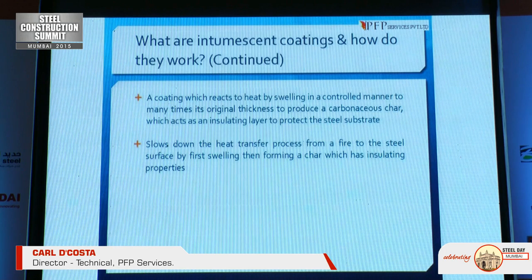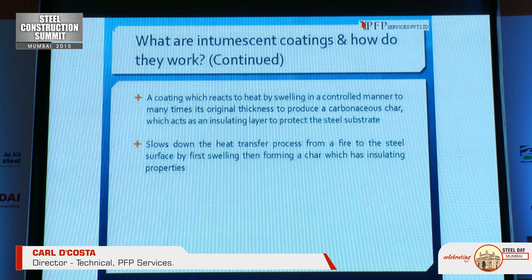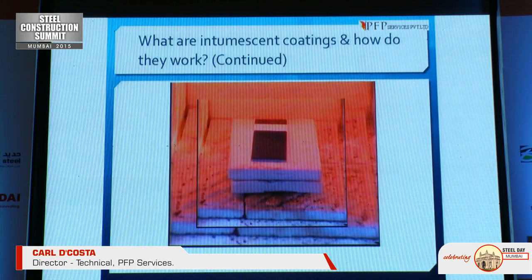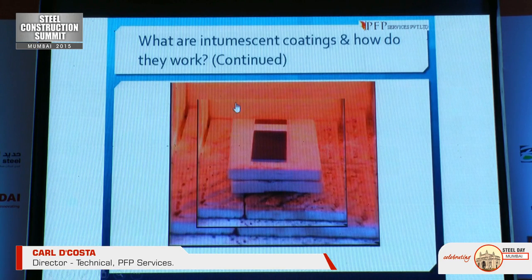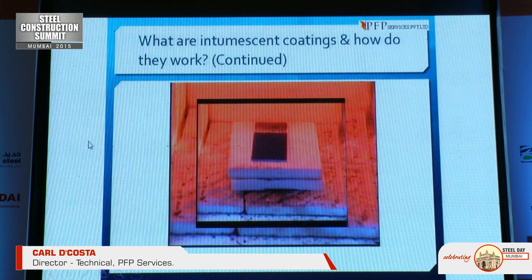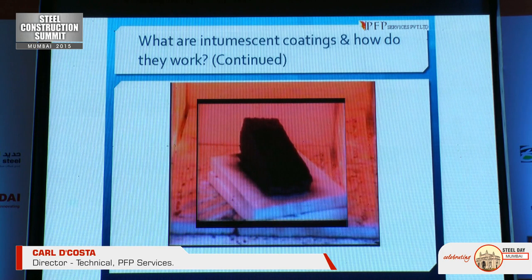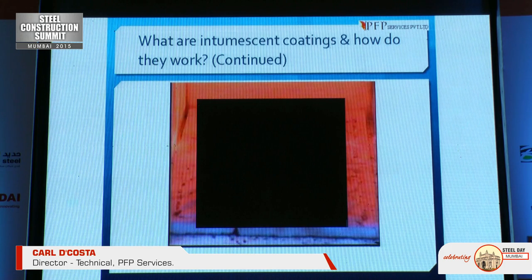An intumescent coating reacts to heat by swelling in a controlled manner to many times its original thickness to provide a carbonaceous char, which acts as an insulating layer to protect the steel structure. It slows down the heat transfer process from a fire to the steel surface by first swelling, then forming a char with insulating properties. It expands approximately 60 to 70 times its original thickness.